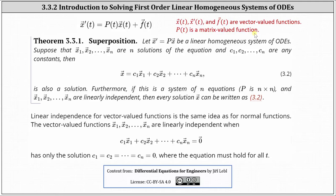Now let's look at the theorem on superposition. Let x prime equals p times x be a linear homogeneous system of ODEs. Recall this is homogeneous because f of t is equal to the zero vector. Suppose that x1 through xn are n solutions of the equation, and c1 through cn are any constants. Then x equals c1 times x1 plus c2 times x2 all the way through cn times xn is also a solution. Furthermore, if this is a system of n equations and x1 through xn are linearly independent, then every solution x can be written in the form given by equation 3.2.